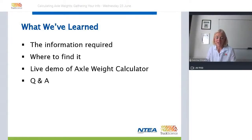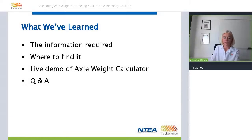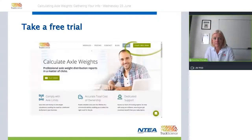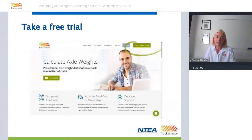That's been a whistle-stop tour of where to find weights, dimensions, and center of gravity information and how to use it within the app. For those not yet using the app, you're welcome to take a free trial from the homepage. If you integrate your NTA membership details, your trial will automatically be upgraded from 7 to 30 days. NTA members also qualify for a discount of $50 off their license per year, bringing the cost of a one-year subscription to $399.